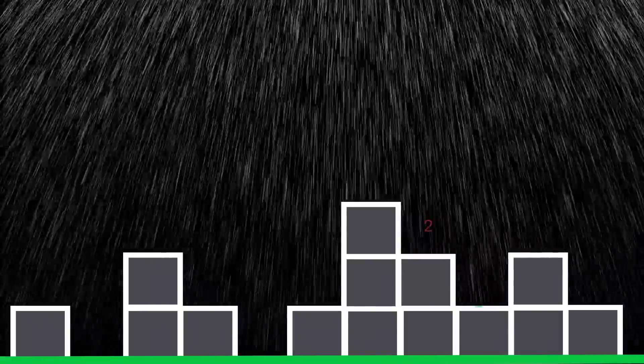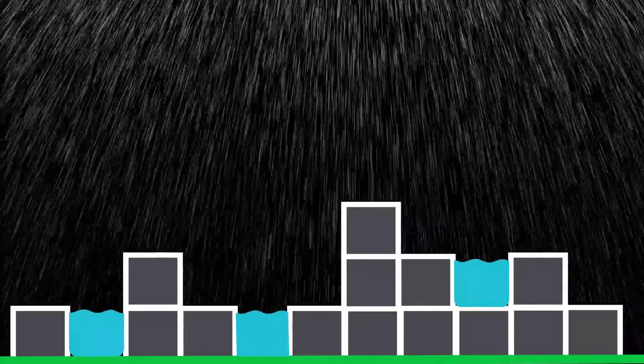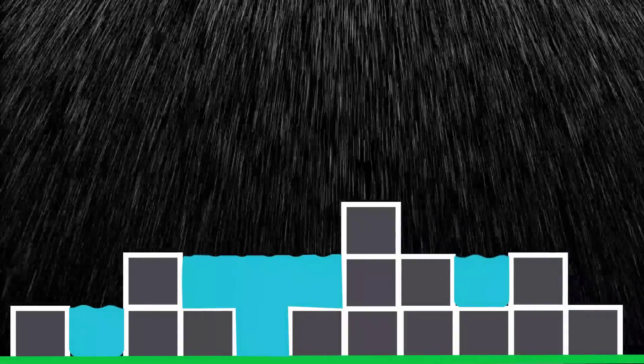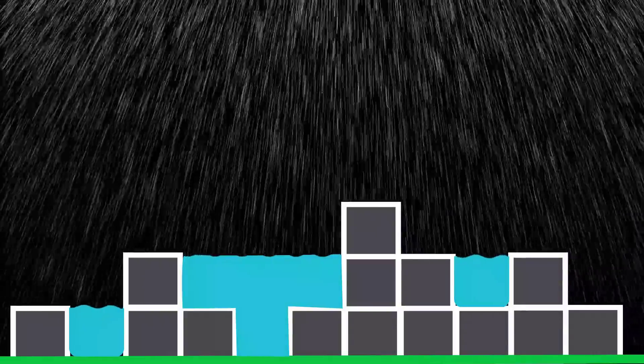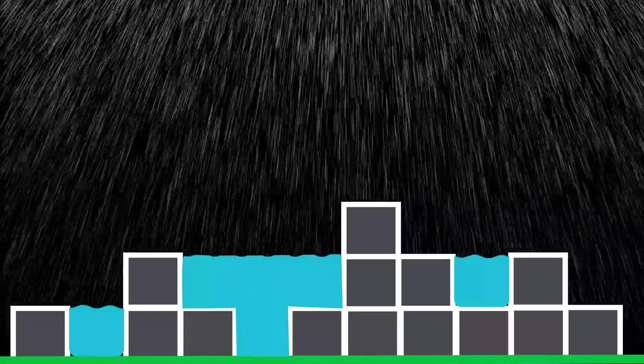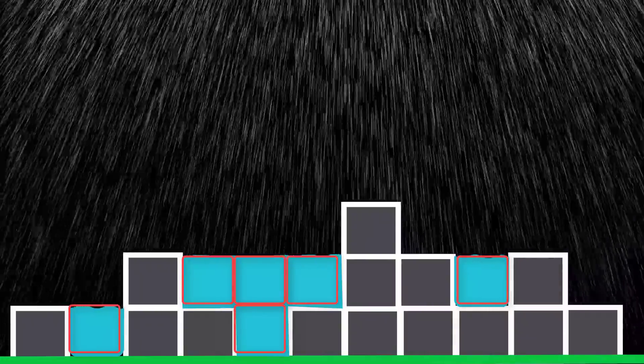In this case, we're given an elevation map of 1, 0, 2, 1, 0, 1, 3, 2, 1, 2, and 1. As the rain intensifies, the water starts collecting between the buildings. The problem asks us to find the total volume of water that will be trapped once everything is said and done. For example, in this case, there are 6 units of water that are trapped in the elevation map.